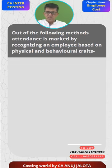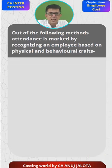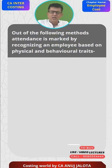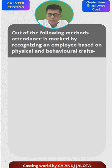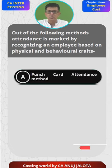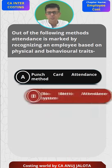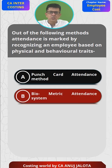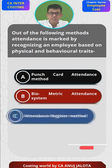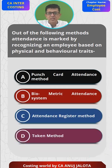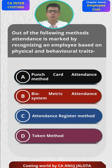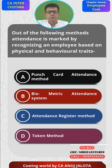Out of the following methods, attendance is marked by recognizing an employee based on physical and behavioral traits. A worker comes to the factory and we have to mark his attendance. The four options are: A — punch card attendance method, B — biometric attendance system, C — attendance register method, and D — token method. I'll explain all of them. If you know the answer, please pause the video here and comment.